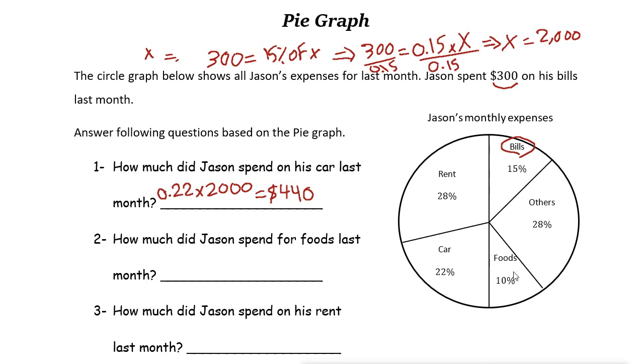The next one is foods. Food here is 10 percent. So 10 percent is just 0.10 times 2000. So if you multiply these you get 200. So $200 for food.